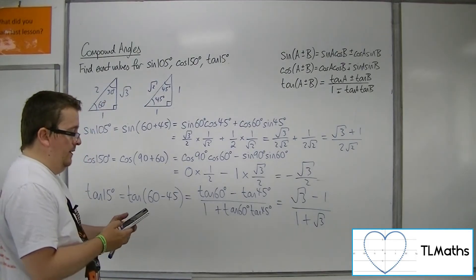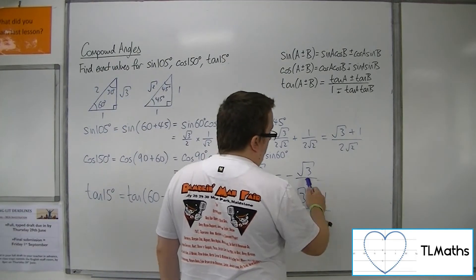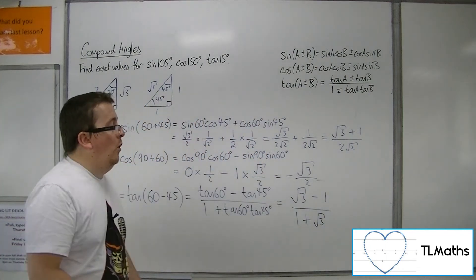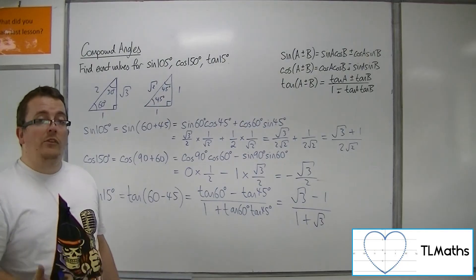Calculator, tan of 15, gives 2 minus root 3, which can be found by multiplying top and bottom of this by 1 minus root 3, so rationalizing the denominator, and you should get to the same result.